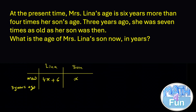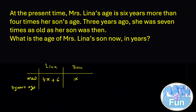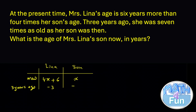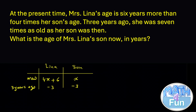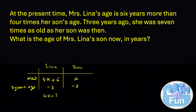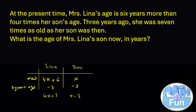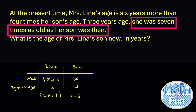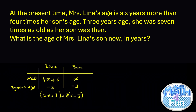Three years ago means we subtract 3 from both ages. Lina's age three years ago: (4x + 6) - 3 = 4x + 3. Son's age three years ago: x - 3. They also told us that three years ago she was 7 times as old as her son, meaning Lina's age at that time equals 7 times the son's age at that time.